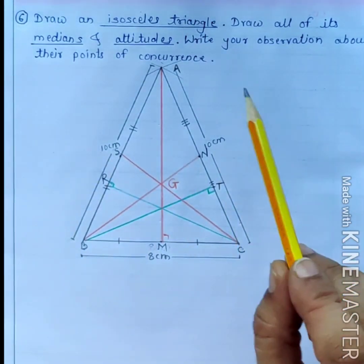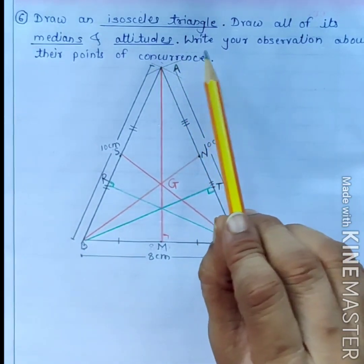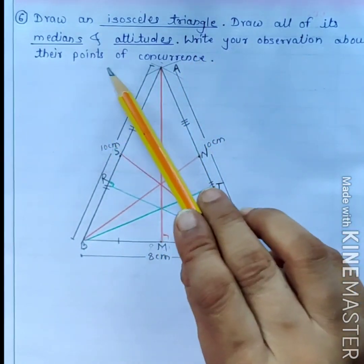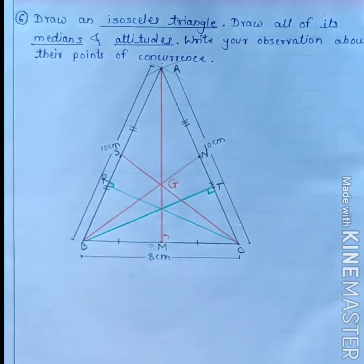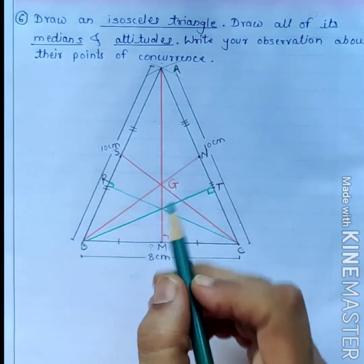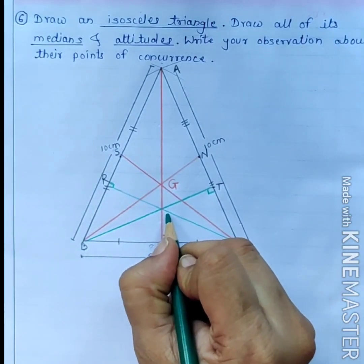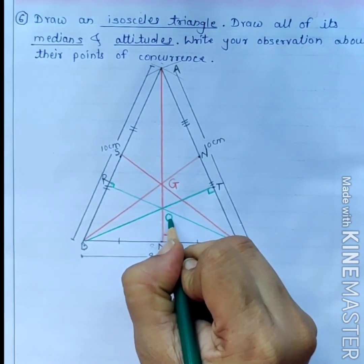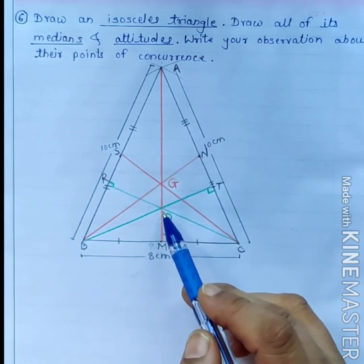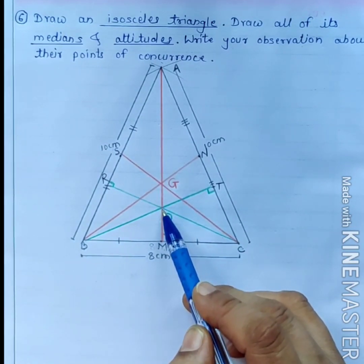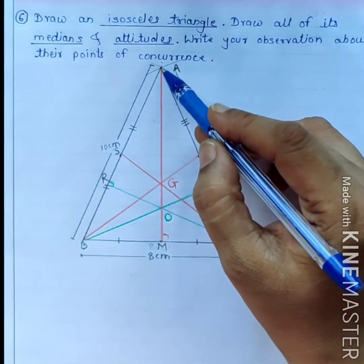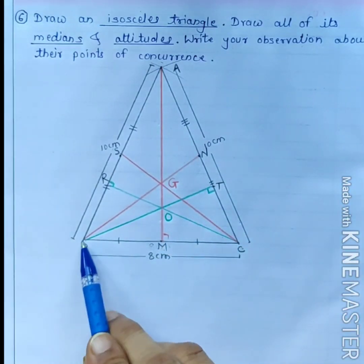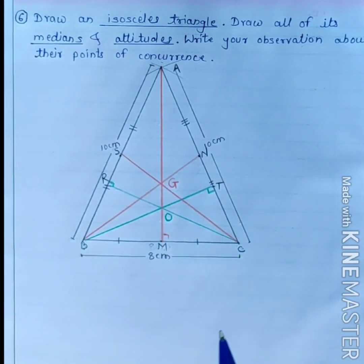The last part of the question asks to write observations about the points of concurrence. The point of concurrence of the altitudes is named O. Points G and O are the points of concurrence of the medians and altitudes respectively, and they both lie on the line which is the perpendicular bisector of the base of this isosceles triangle.